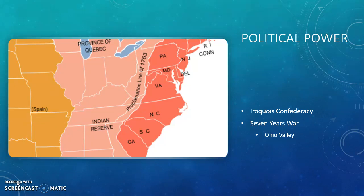To review: Indian people limited, altered, and shaped the ambitions of European people during this time in several ways. First, they were able to successfully make Europeans follow some of their cultural practices, certainly altering what Europeans would have liked to have done but allowing them to be a player in early colonial America. They additionally revolted, showing Europeans that they were not going to simply sit back and accept whatever was happening, and made clear in no uncertain terms where their line was. They were also large players in the politics of early colonial America and were able to develop their own ideas about how things would play out.